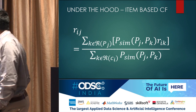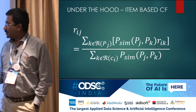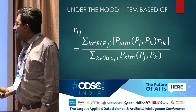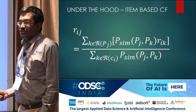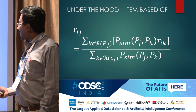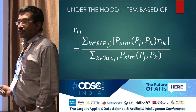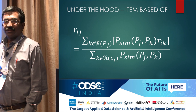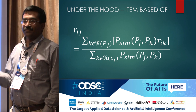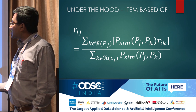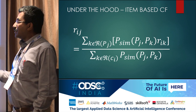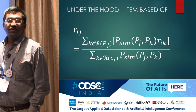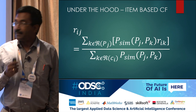I do not want to scare you with the math, but I want to bring out something important. This is a predicted rating for a certain user I and product J. We look at products which are similar to J within some neighborhood, take the known rating — which could be derived from actual purchases, online clickstream behavior, or reviews — and take a weighted sum using product similarity. The core thing here is product similarity.